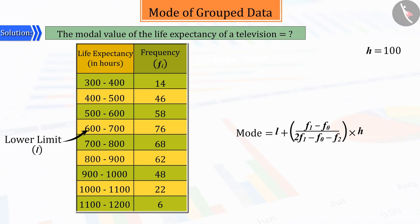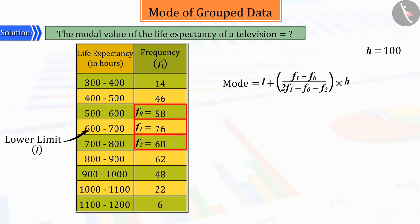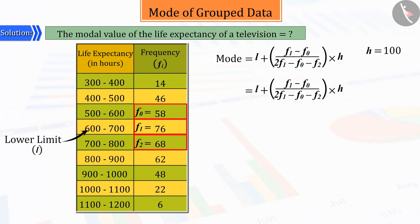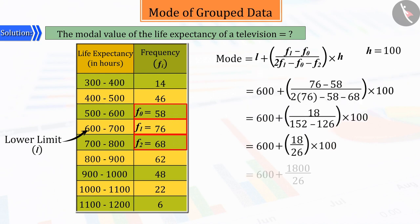Hence, the values of the lower limit of the modal class, the size of the class, the frequency of the modal class, the frequency of the class immediately before the modal class and the frequency of the class immediately after it, on being substituted in the modal formula and on being solved, give the value of the mode as 669.23.